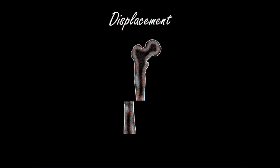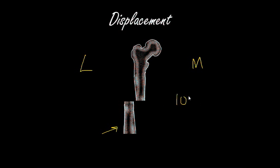Once you've described the type of fracture, you want to mention whether the fracture is displaced. Displacement is always described in relation to the distal fragment. In this example, the transverse fracture has a displaced distal fragment. When describing displacement, you state which direction it has moved — for example, laterally — and how much displacement has occurred: in this case 100% displacement laterally. It may be 50% or 30%, but it's usually best to give a rounded figure as precise numbers are difficult.